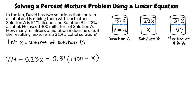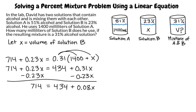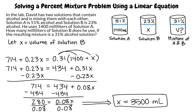Since the sum of the amounts of the two solutions equals the amount of the mixture, the equation is 714 plus 0.23x equals 0.31 times the quantity 1400 plus x. Distributing the 0.31, we get 714 plus 0.23x equals 434 plus 0.31x. Subtracting 0.23x from both sides gives 714 equals 434 plus 0.08x. Subtracting 434 from both sides gives 280 equals 0.08x. Dividing both sides by 0.08, we get x equals 3500 milliliters.